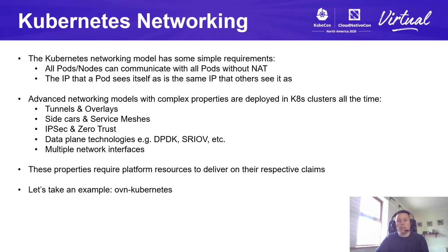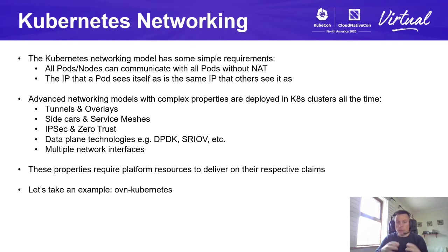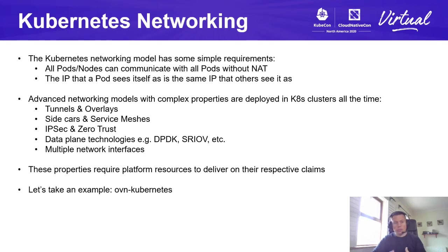The Kubernetes networking model today has some simple requirements: all pods and nodes can communicate with all pods without NAT, and the IP a pod sees itself as is the same IP that others see it as. This is very primitive to Kubernetes networking, but that hasn't stopped advanced networking models with complex properties being deployed — things like tunnels and overlays, advanced service meshes with sidecar deployments, IPsec and zero trust, and data plane technologies like DPDK and SRIOV for low latency and high performance.